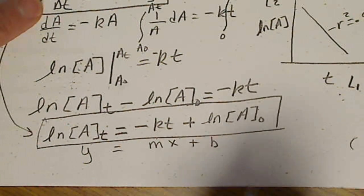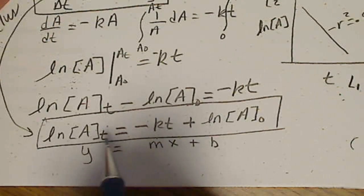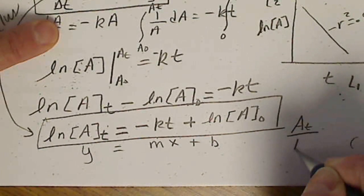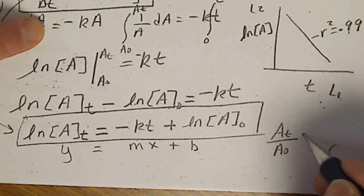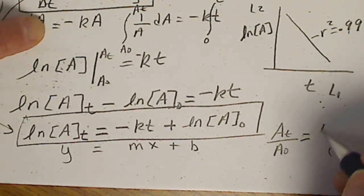The other thing that we could do for first order is solve for when A over T, or A of T, A, when this ratio is 1 half.